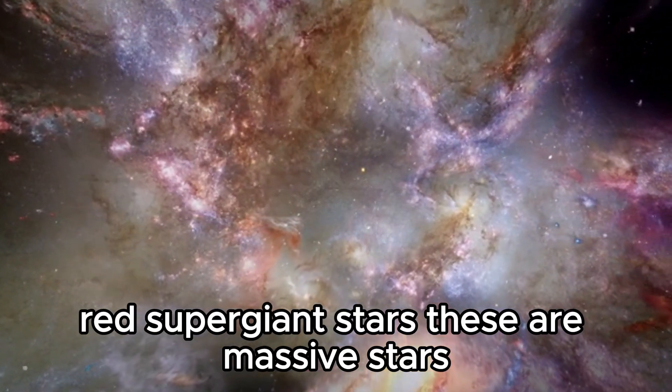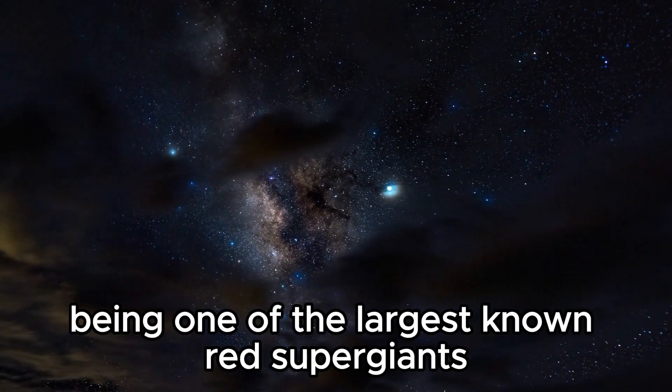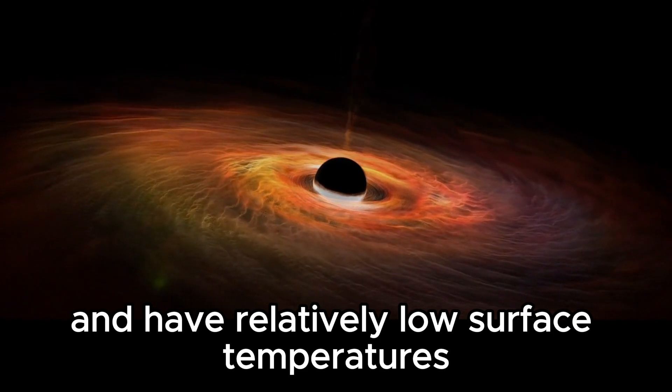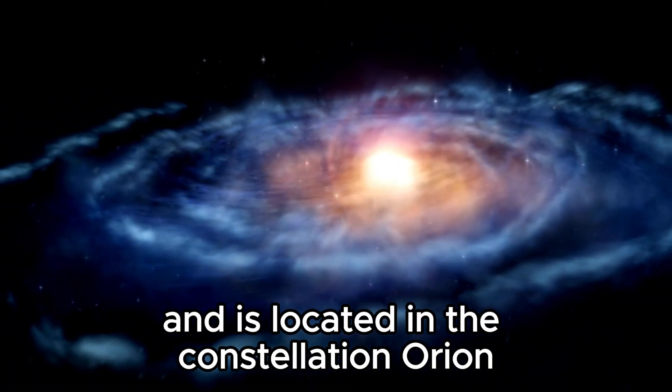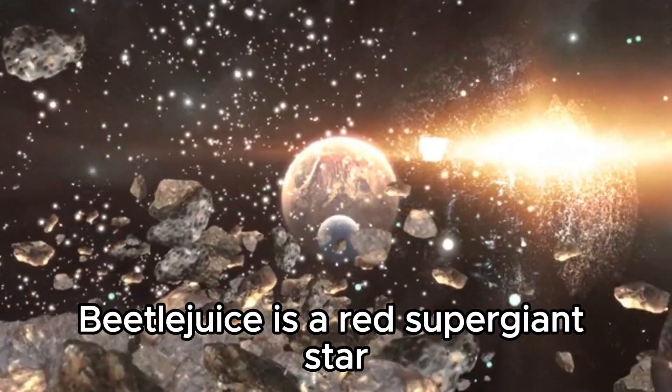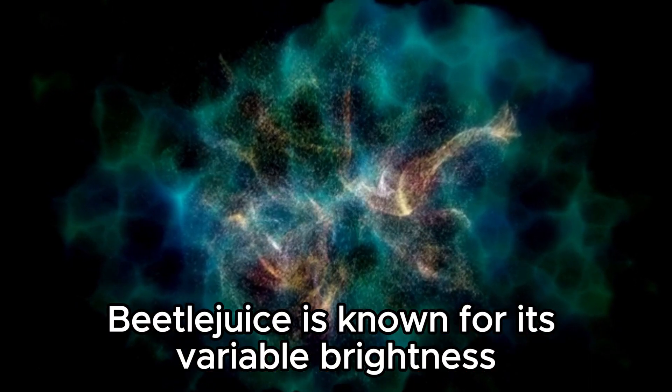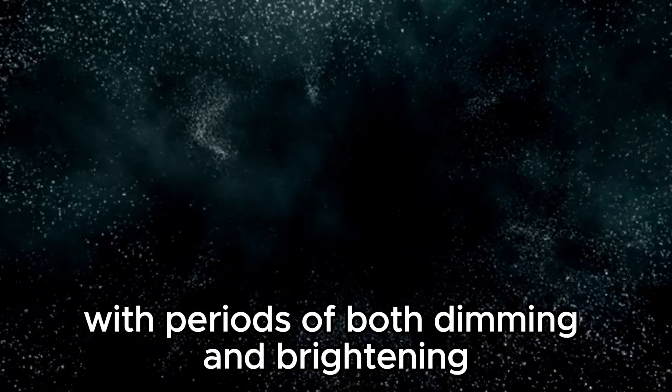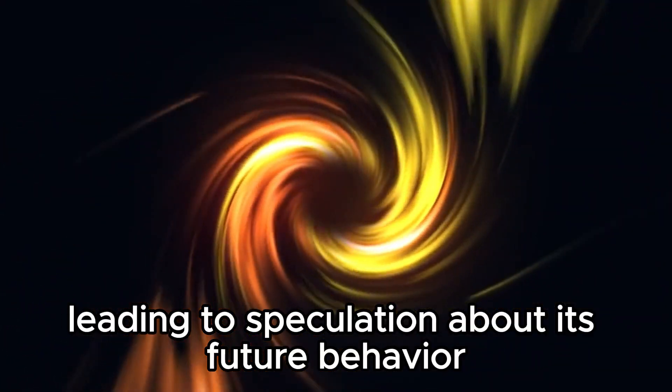Red supergiant stars are massive stars in the late stages of their evolution. They have expanded to enormous sizes, with Betelgeuse being one of the largest known red supergiants. Betelgeuse is one of the brightest stars in the night sky, located in the constellation Orion, approximately 650 light-years away from Earth. It has a mass estimated to be around 10 to 20 times that of the Sun. Betelgeuse is known for its variable brightness, with periods of both dimming and brightening. Recent observations have shown significant changes in its brightness, leading to speculation about its future behavior.